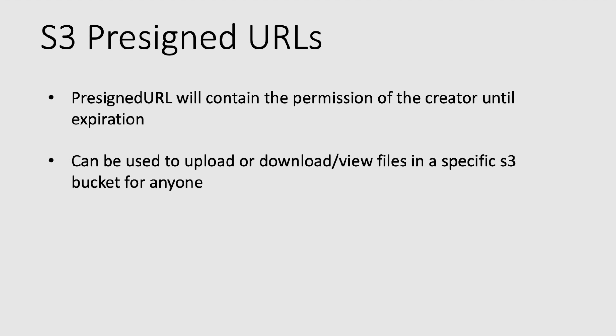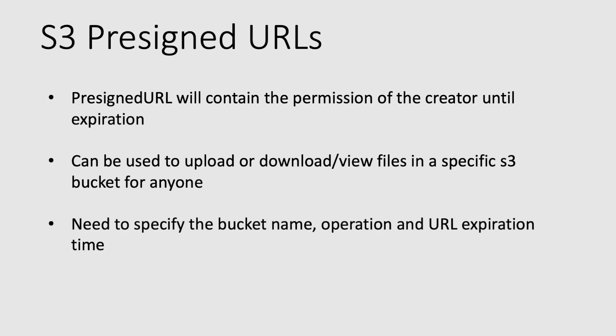A pre-signed URL can be used either to download files or upload files to an S3 bucket. When creating the pre-signed URL, we define whether it is for uploading or downloading. We also have to specify a bucket name, the operation — which is the GET or PUT operation — and the expiration time.